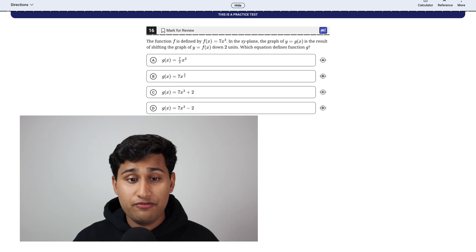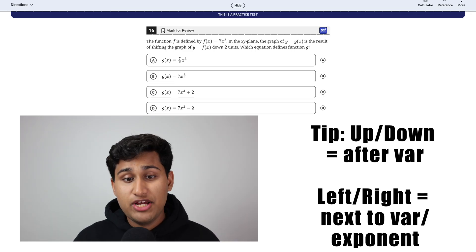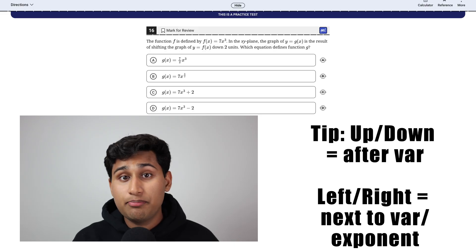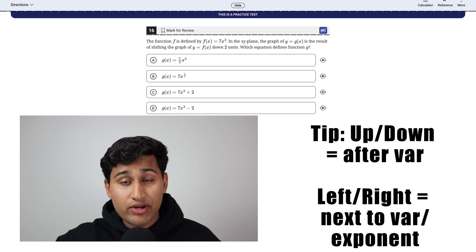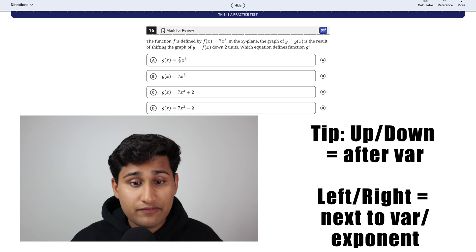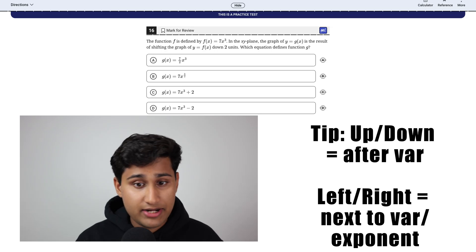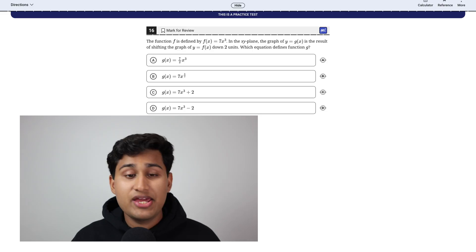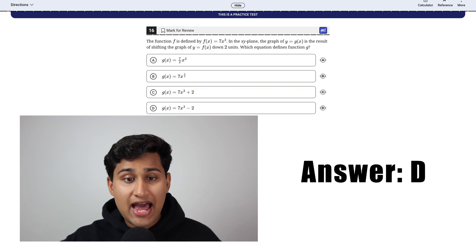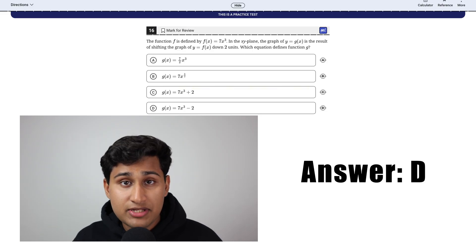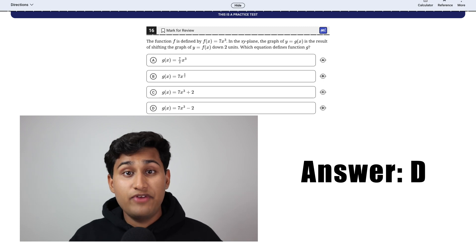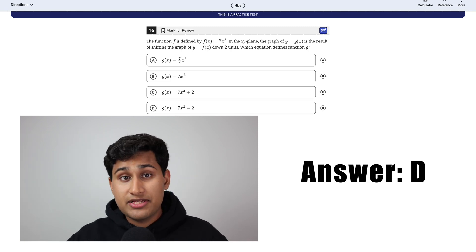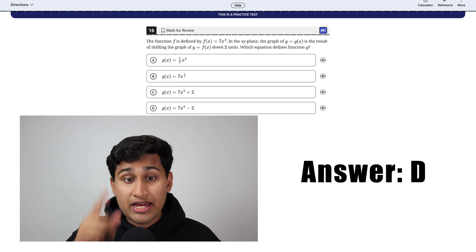The next type of problem they like to ask is function transformations. This is where the graph shifts. So a tip for this shifts can move a graph up or down or left or right. Up or down is when there's a plus or minus sign after the variable or exponent. And a shift left or right is when there's a sign plus or minus right after the variable. Here, they're asking what defines function G. And the answer would be D because it's going down. Notice how that minus two is not immediately after the variable, which is X after X to the third, then it's minus two.